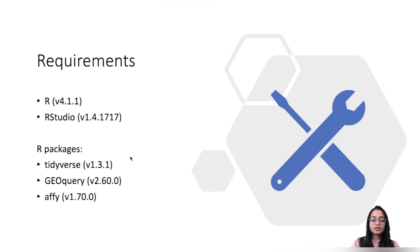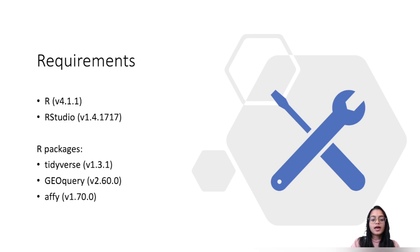The requirements for today involve three R packages: tidyverse for data manipulation, the GEOquery package to retrieve data from NCBI GEO, and the affy package which provides the function to perform RMA normalization. Let's switch to RStudio to get started.